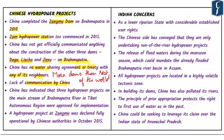China has indicated that three hydropower projects on the mainstream of the Brahmaputra River in Tibet Autonomous Region were approved for implementation. India, as a lower riparian state with established user rights to transborder rivers, carefully monitors all developments on the Brahmaputra. The government has consistently conveyed its views and concerns to Chinese authorities, urging them to ensure downstream states are not harmed. China's response has been that these are run-of-the-river hydropower projects not involving diversion of water.